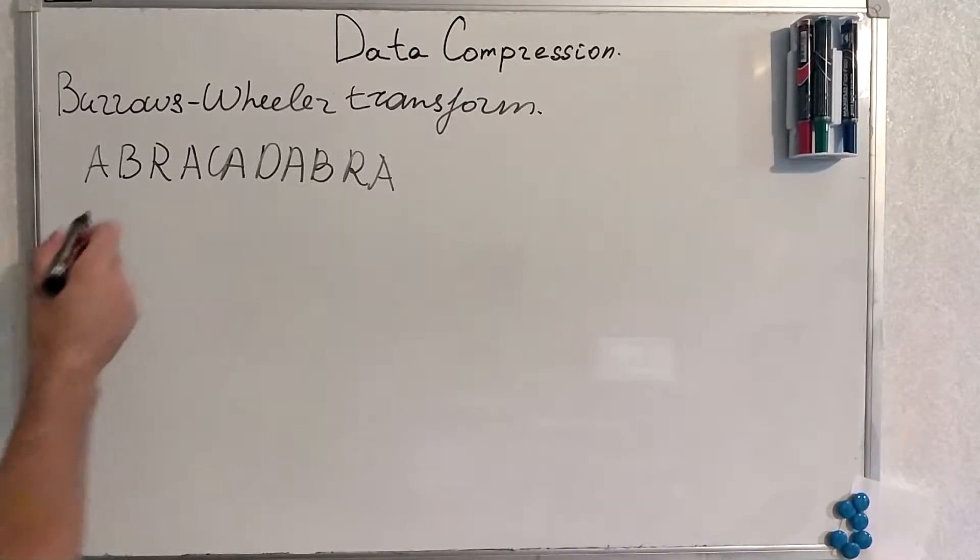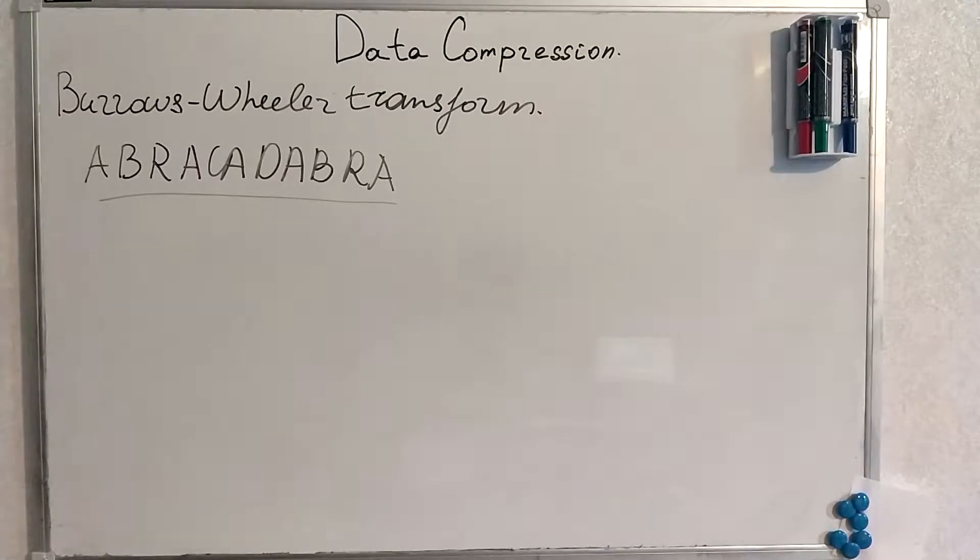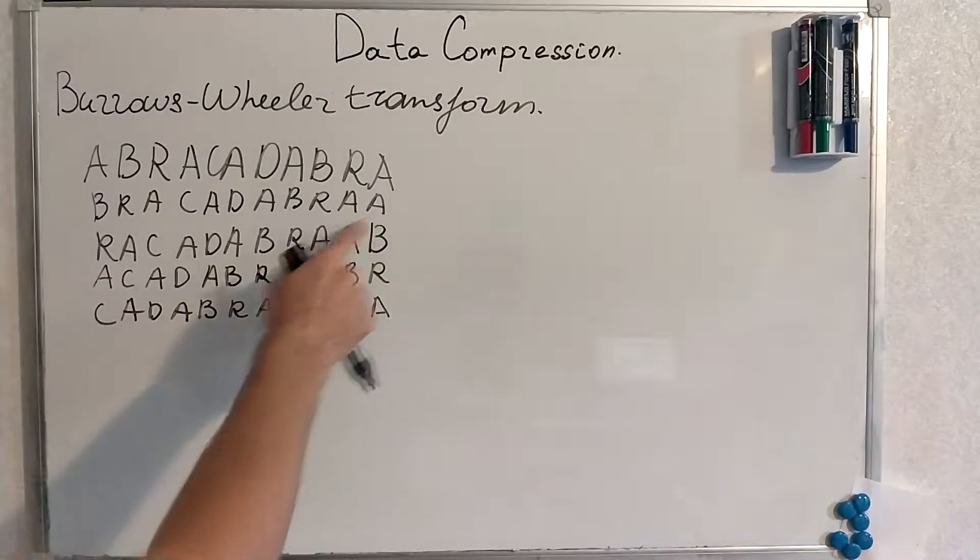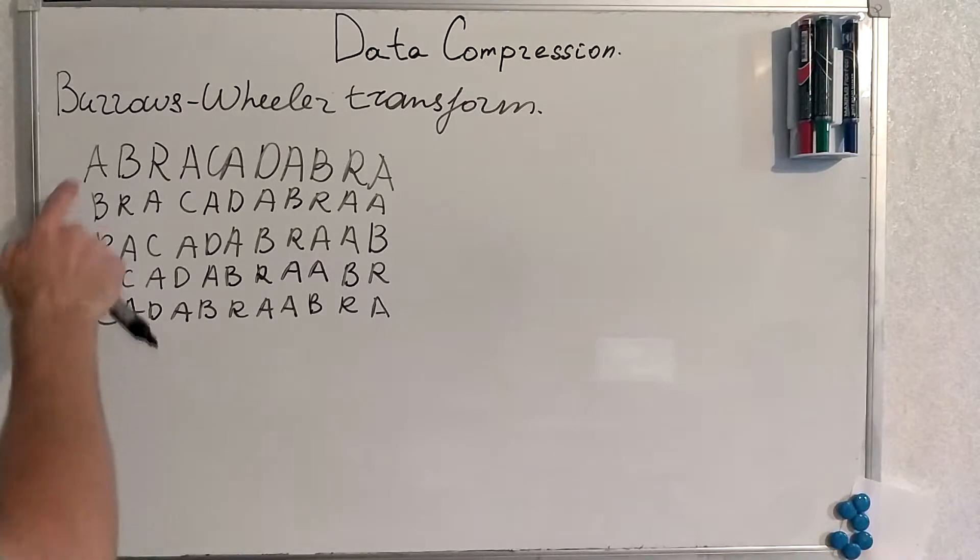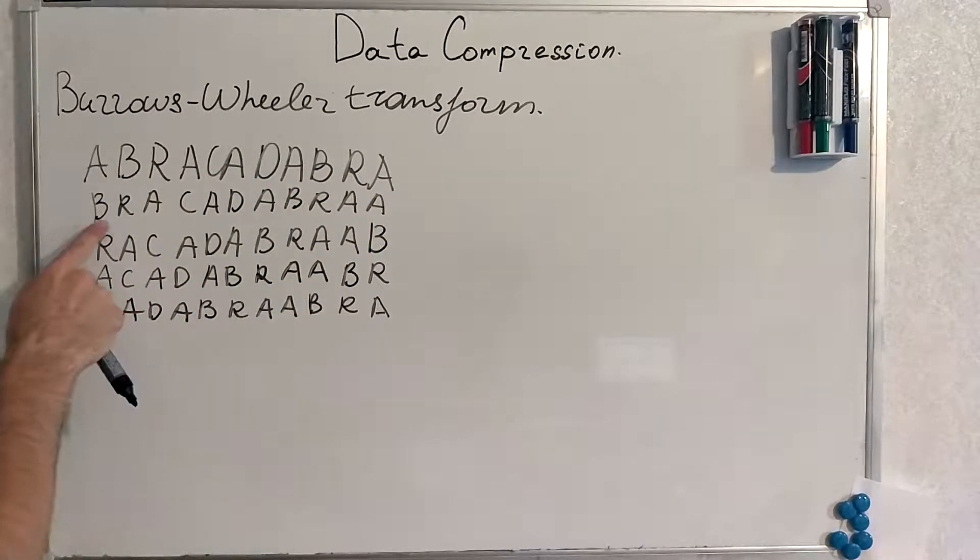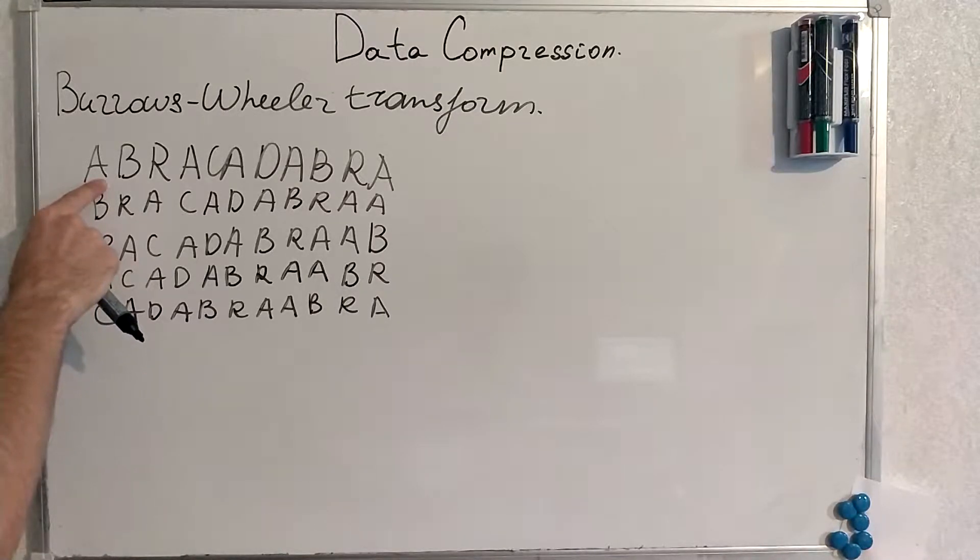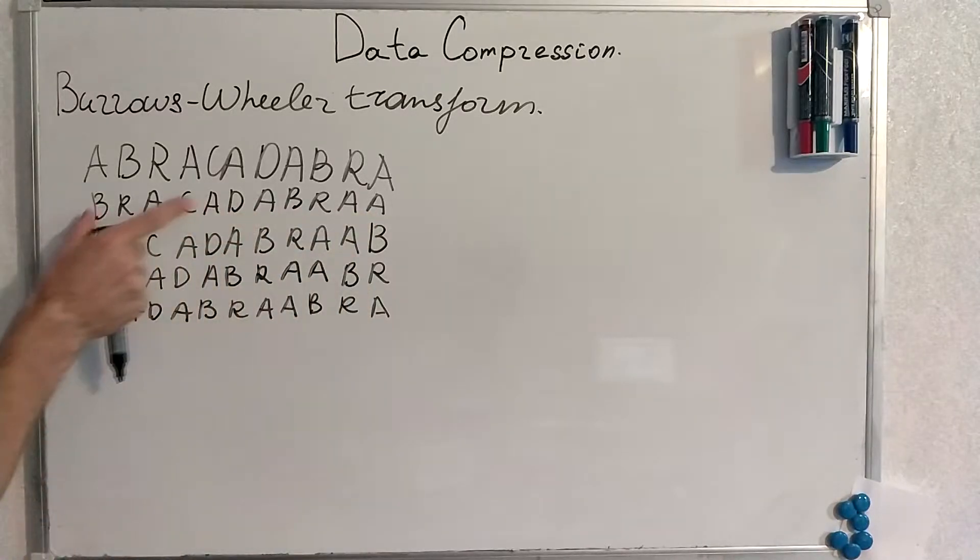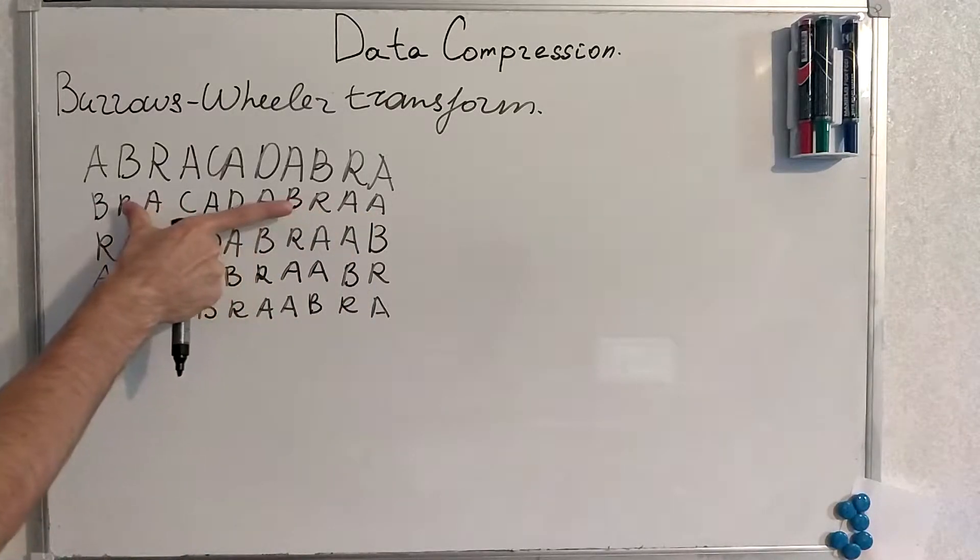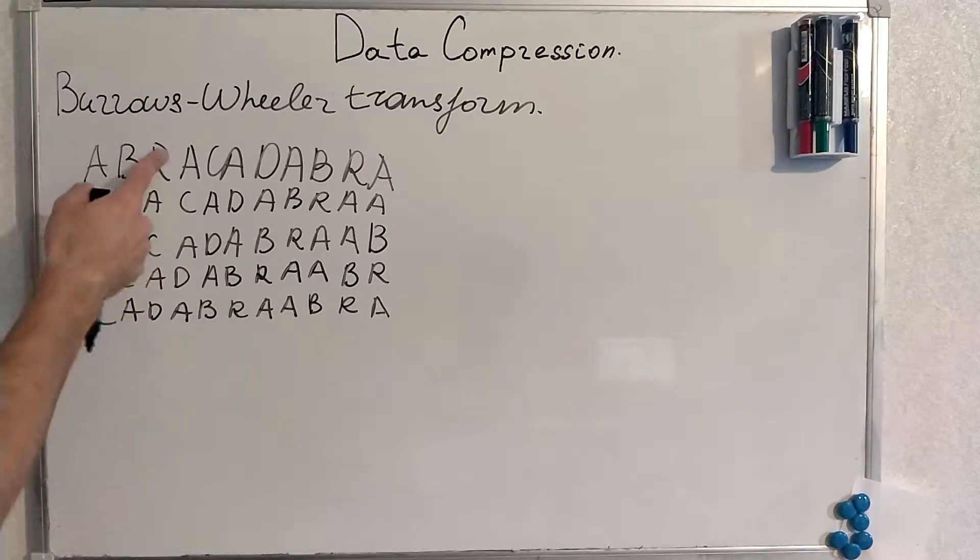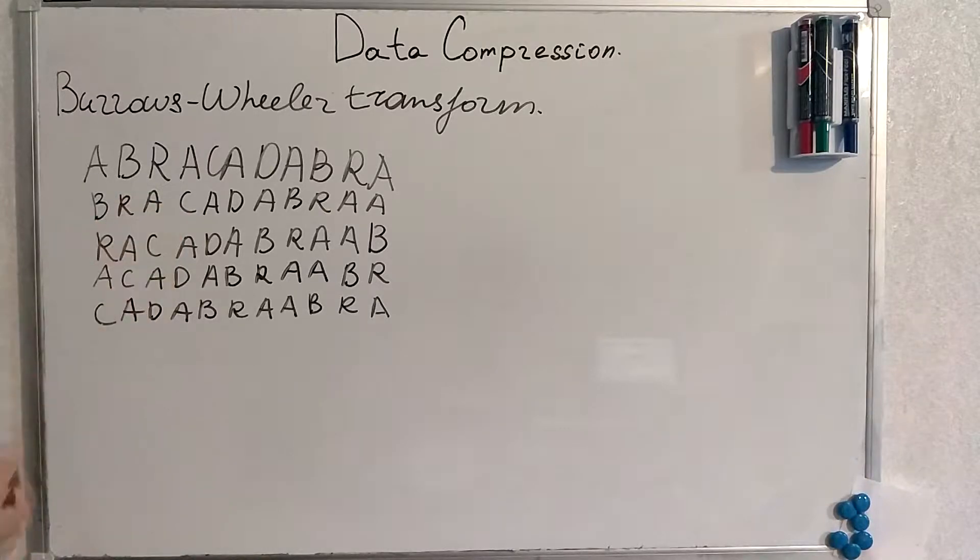We will work with this sequence as example. These words are cyclically shifted versions of abracadabra. Here we shift one symbol to the left and this A that has been on the very left has become on the very right. And now we cyclically shift the second word starting from R and etc. You see this pattern cyclically shifted.